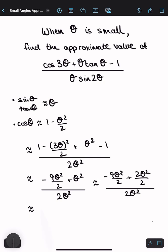Adding the fraction on top, you get minus 7θ² over 2 divided by 2θ².